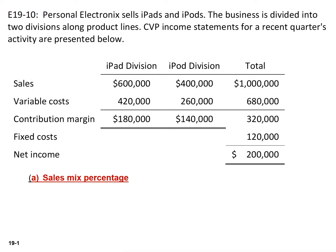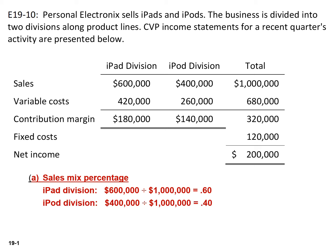The first thing we need to calculate is the sales mix percentage. The iPad division sales are 600,000. We're going to divide that by the total sales of a million to arrive at a 60% sales mix percentage for the iPad division. The iPod division has 400,000 in sales. If we divide that by the total sales of a million, we have the sales mix of 40% for the iPod.